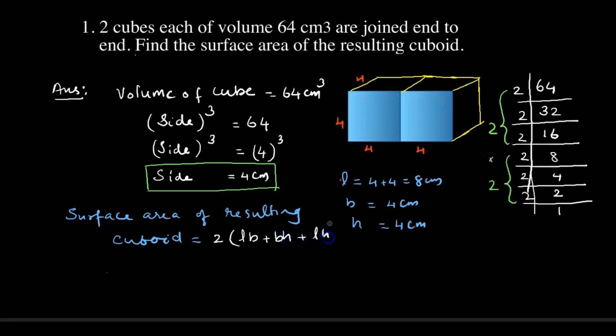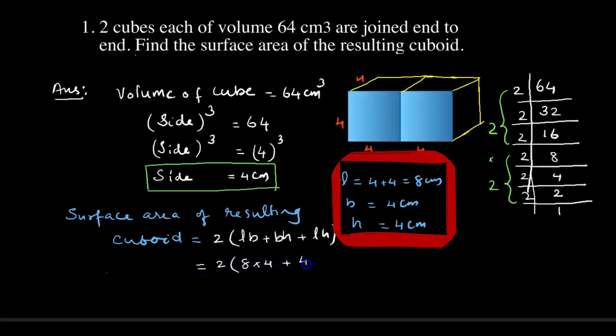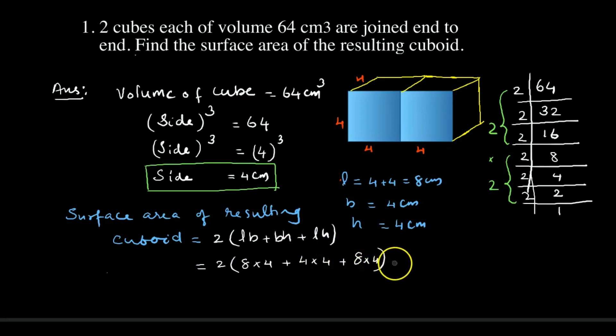Now put the values: 2 into (8 into 4 plus 4 into 4 plus 8 into 4). Now we have to multiply and add it. 2 into (8 into 4 is 32, plus 4 fours are 16, plus 8 fours are 32).